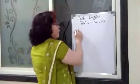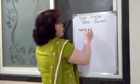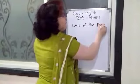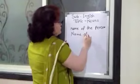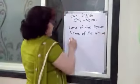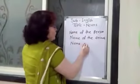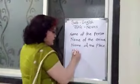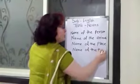Now see, name of the person. Name of the animal. Name of the place. And the last one is name of the thing.